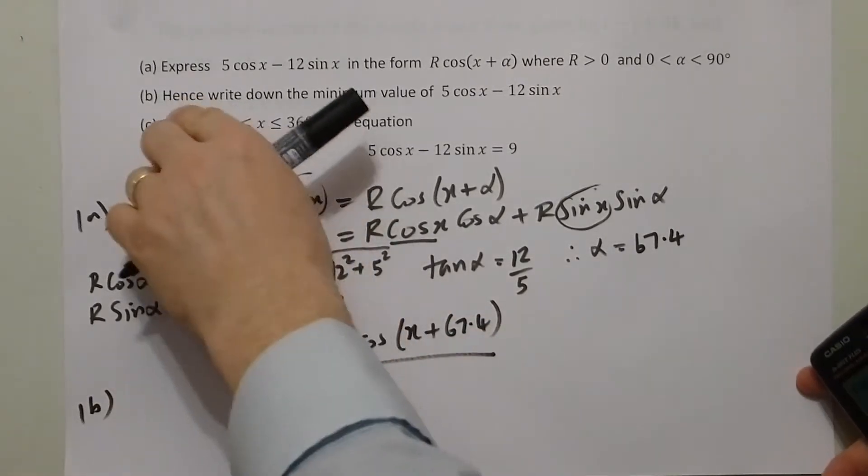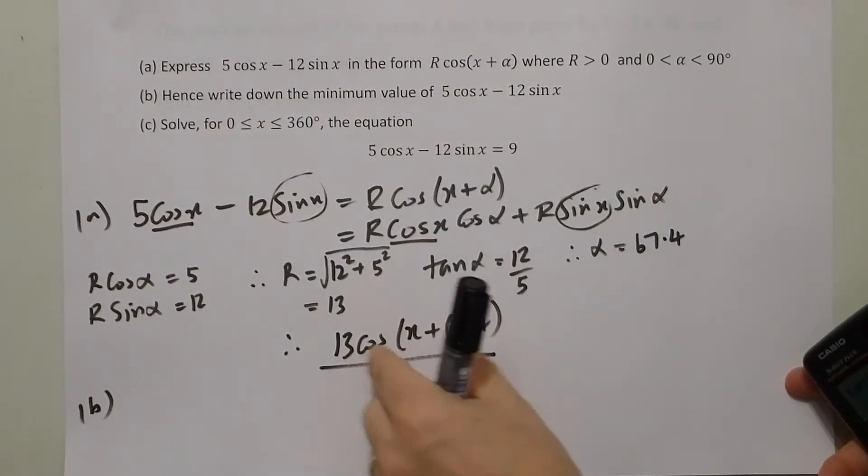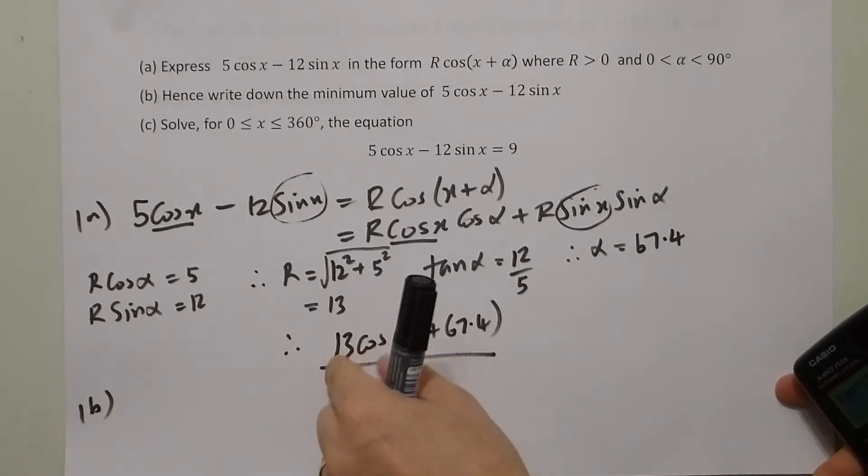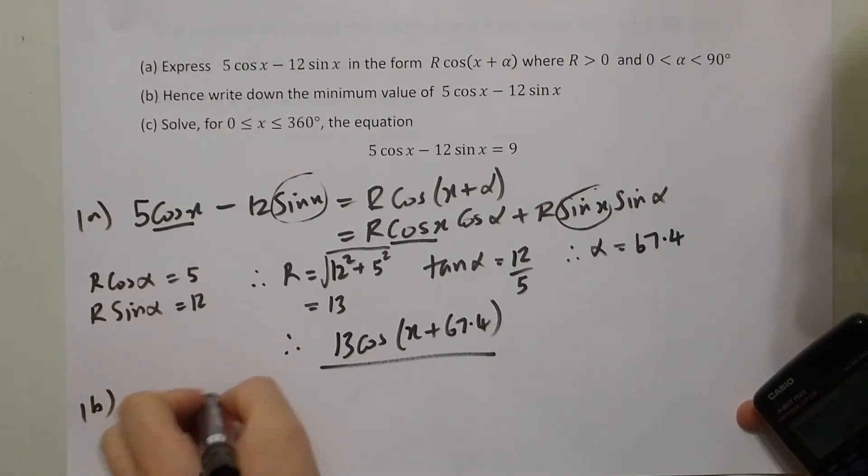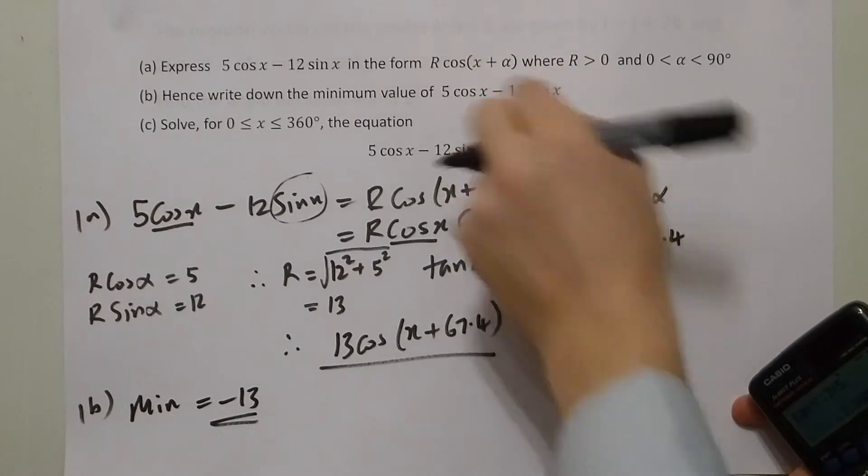Part B asks you to state the minimum value of this. Once you've got it in one format, the maximum value of cos is 1, the minimum value is minus 1. So the maximum value of all of this is 13, the minimum value is minus 13.